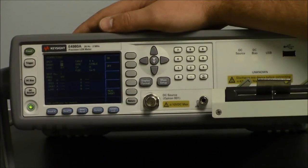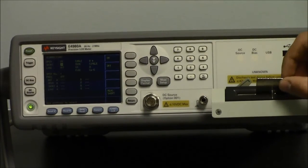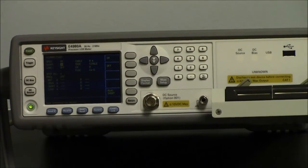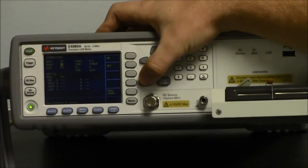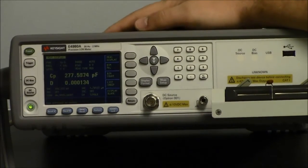After the short correction has been completed, we are ready to start taking measurements of our devices. In this case, we have a capacitor. Put your capacitor in. Hit display format to go back to the display. And there's our measurement.